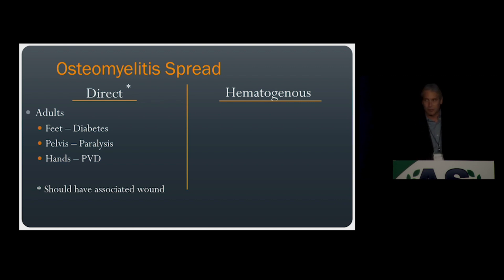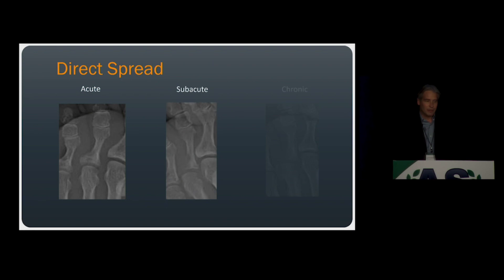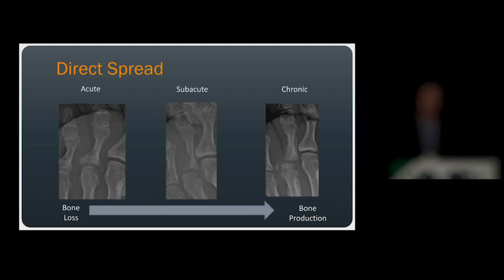Hematogenous osteomyelitis is not associated with a skin wound, and it's typically seen in children, usually occurring in the metaphyses of long bones or in the pelvis. When thinking about direct spread osteomyelitis, you can think of it as an evolution of the bone's response to infection, characterized early on by bone loss — presenting as bone demineralization and erosions. Over time, as your body mounts a healing response, you develop sclerosis, periosteal reaction, and other bony production.